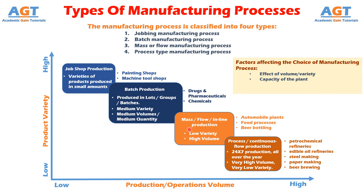Factor number 3: Lead time. The continuous process normally results in faster deliveries as compared to batch process. Therefore lead time and level of competition certainly influence the choice of production process.